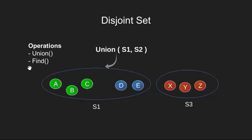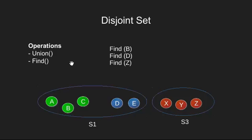Next, we can use find operation to determine which subset a particular element is in. So if we say find B, it will look into the universe of sets and give us S1. Similarly, find of D will again give us S1 and find of Z will give us S3.